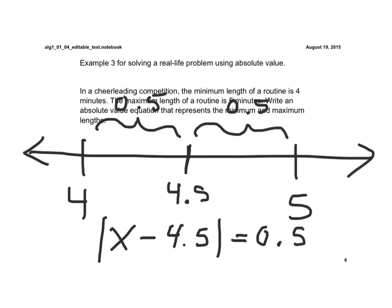If we put 5 in here, 5 minus 4.5 would be 0.5, and the absolute value of 0.5 is 0.5. If we put 4 in for x, 4 minus 4.5 would be negative 0.5. When I take the absolute value of that, it's also 0.5.